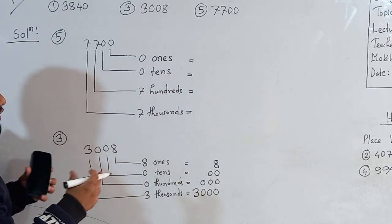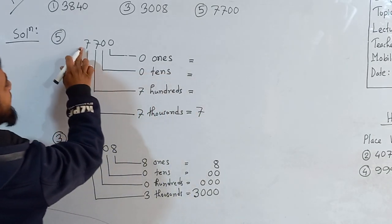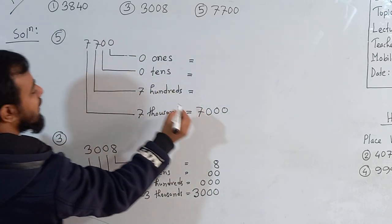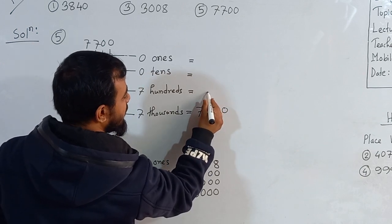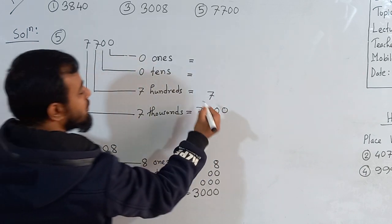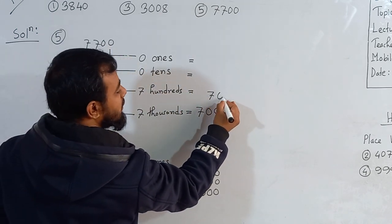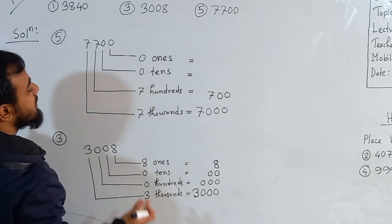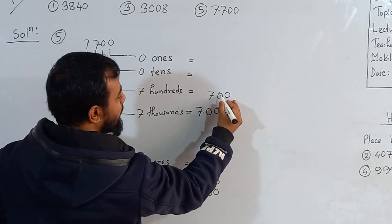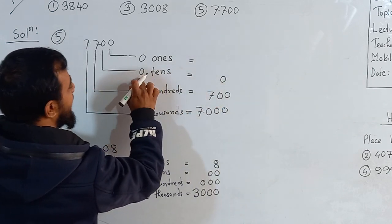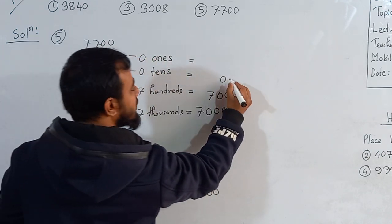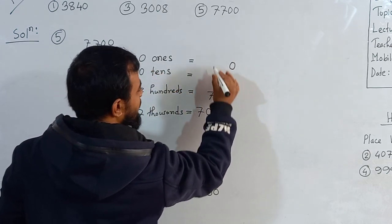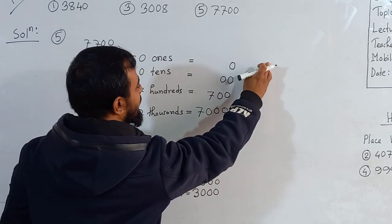I will start from the bottom. 7 in the 1000's place: after this 7 we have 1, 2, 3 digits, so we give 3 zeros — 7000. The next 7 is in 100's place; write 7 and after it we have 2 digits, so 2 zeros to the right — 700. The 0 in 10's place: write 0 with 1 digit after it, so one zero to its right — 00. The 0 in the 1's place: after this 0 we have no digits, so we can't write any digits after it.